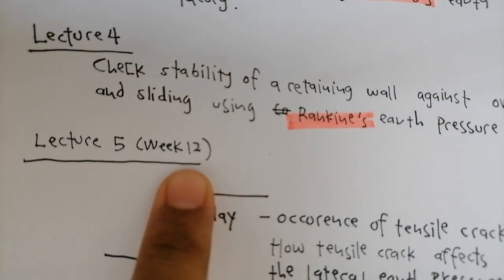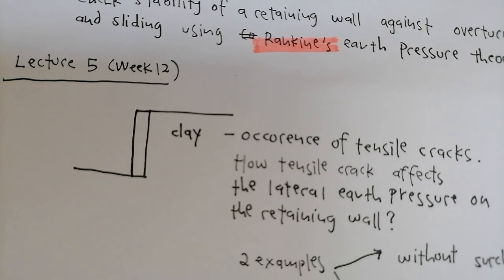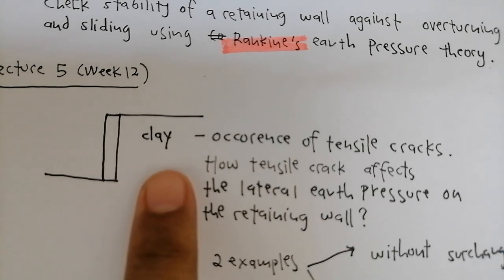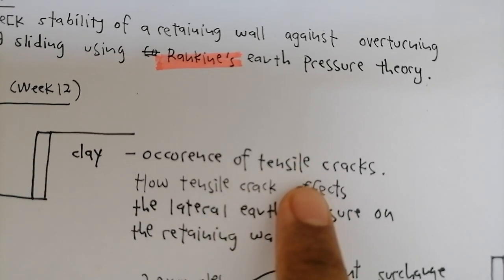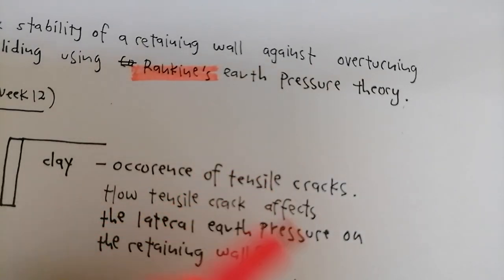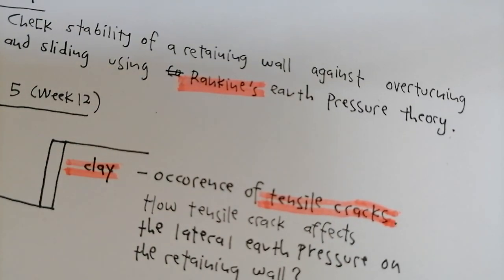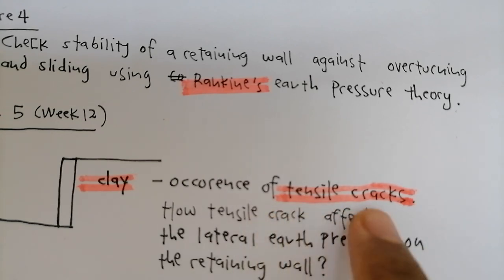This is Week 12, Lecture 5. Previously we always discussed about sand. But in reality, soil comes in many types — we learned that in soil mechanics. We have sand, and we also have clay. This week in Lecture 5, we will explore clay and also the occurrence of tensile cracks — what happens to lateral earth pressure on the retaining wall when the soil is clay and tensile cracks occur.